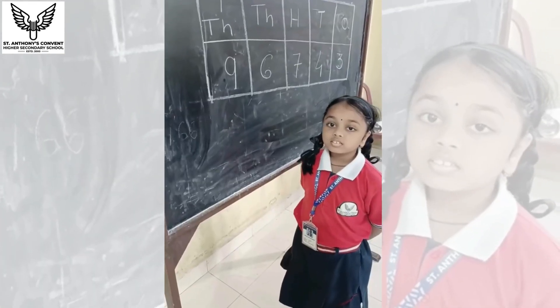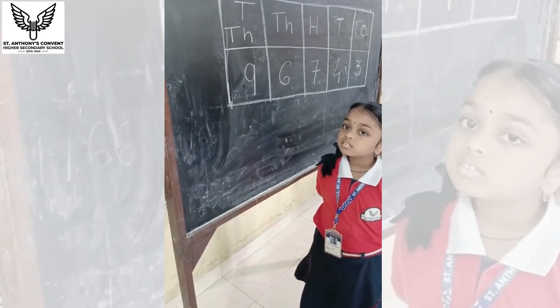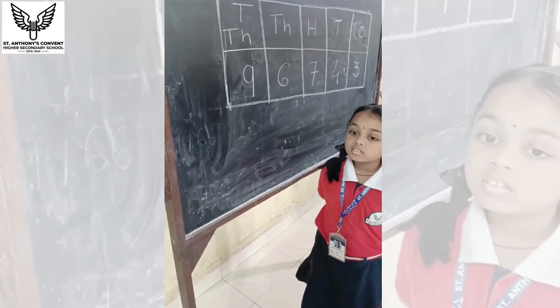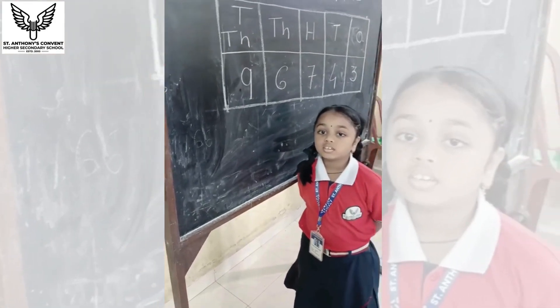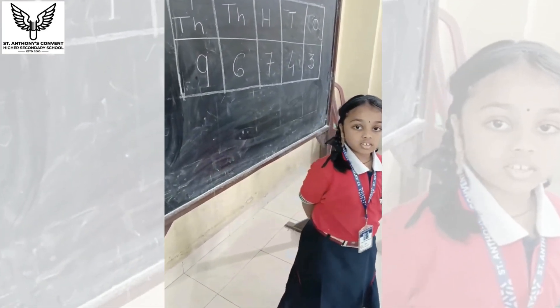Samiksha, tell me what is the place value of the number at the thousands place? Six thousand. Very good Samiksha. Tanishka, tell me what is the place value of the number at the tens thousands place? Ninety thousand. Very good, it's ninety thousand.